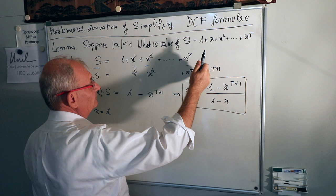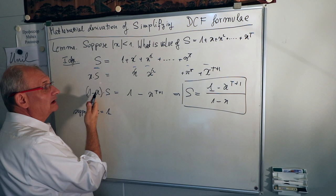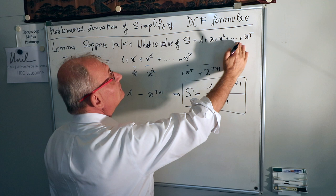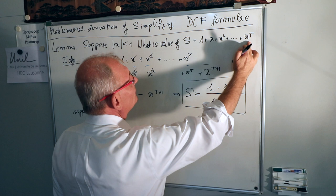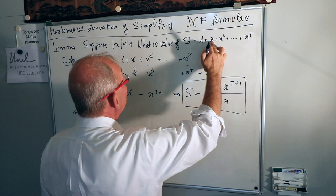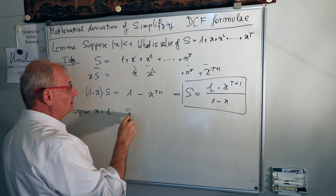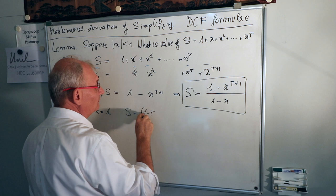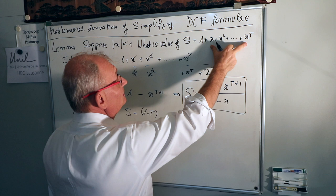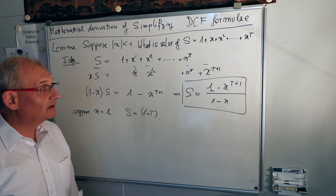You have to go one step back. You can only apply this reasoning if 1 minus x is nonzero — you are not allowed to divide if 1 minus x is not defined. So if all the x's are equal to 1, you have 1 plus 1 plus 1 squared, with terms from x^0 up to x^t, giving t plus 1 terms. So S in this case equals 1 plus t.